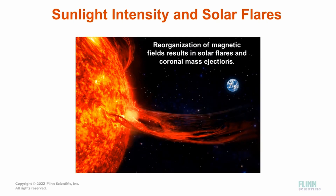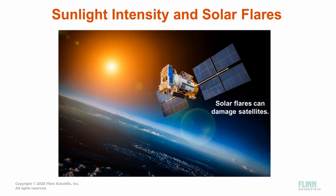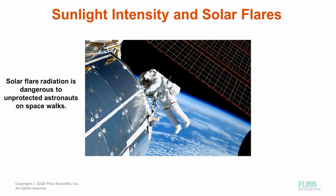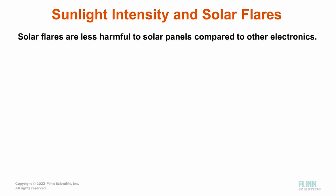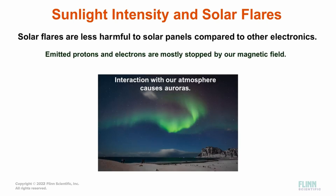Like Earth, the sun also has magnetic fields. These magnetic fields can get tangled, and during reorganization emit a solar flare, which is a large explosion of energy from the sun's surface. It is often accompanied by a coronal mass ejection, which is plasma ejected from the surface. The sun can also produce solar storms, which is when solar flares become more prominent. This intense burst of radiation can damage the satellites we use for navigation and communication, and is also hazardous to astronauts on a spacewalk. The sun's surface activity is closely monitored — if solar flares are expected, satellites can be put into safe mode and astronauts avoid spacewalks. Solar flares are less likely to damage a solar panel compared to other electronic equipment, as the protons and electrons emitted are mostly stopped by a magnetic field, creating auroras.